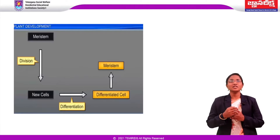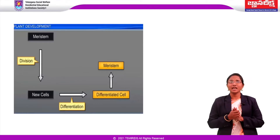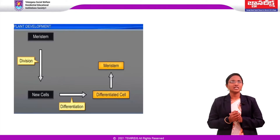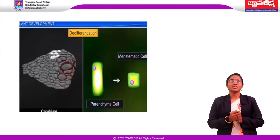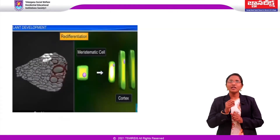For example, to form a tracheary element, the cells lose their protoplasm and develop very strong elastic lignocellulosic secondary cell walls to carry water over long distances even under extreme conditions. Plants also show de-differentiation, where living differentiated cells that have lost the capacity to divide can regain that capacity under certain conditions, for the formation of meristems — such as interfascicular cambium and cork cambium — from fully differentiated parenchyma cells.